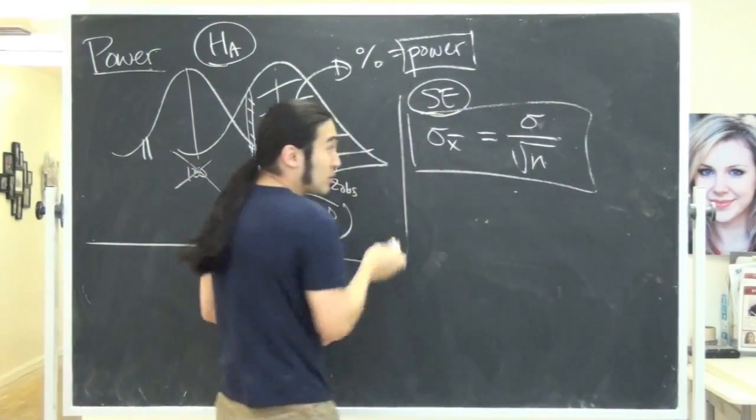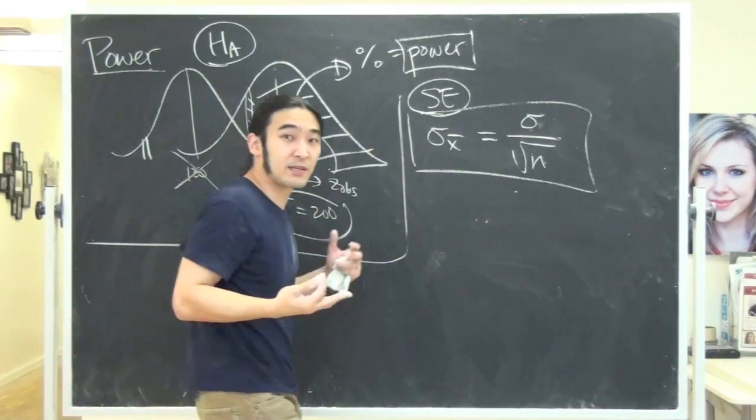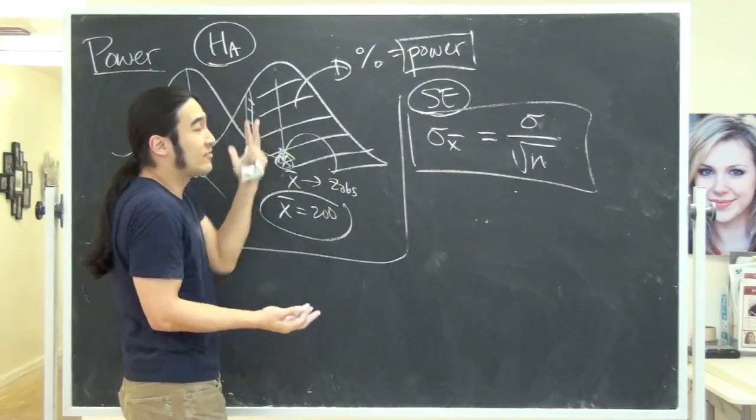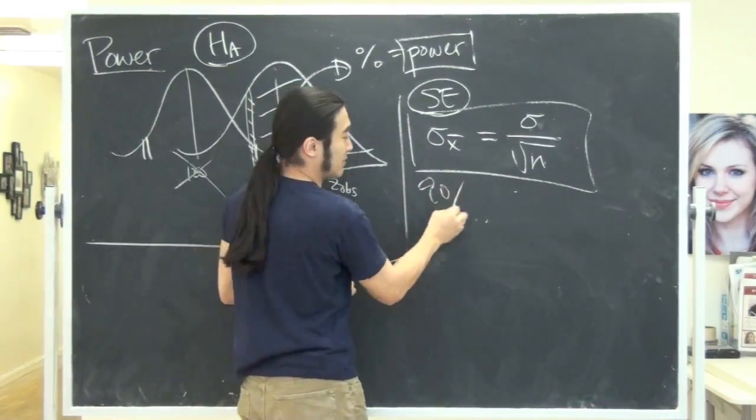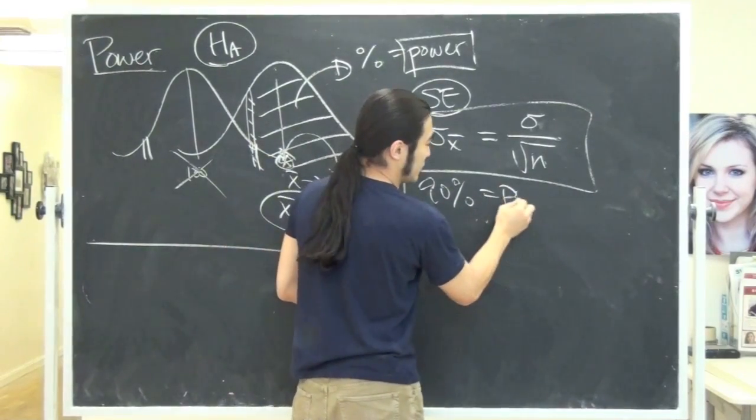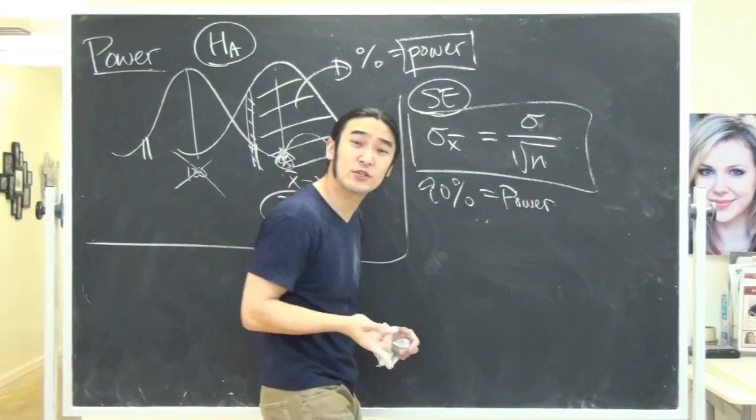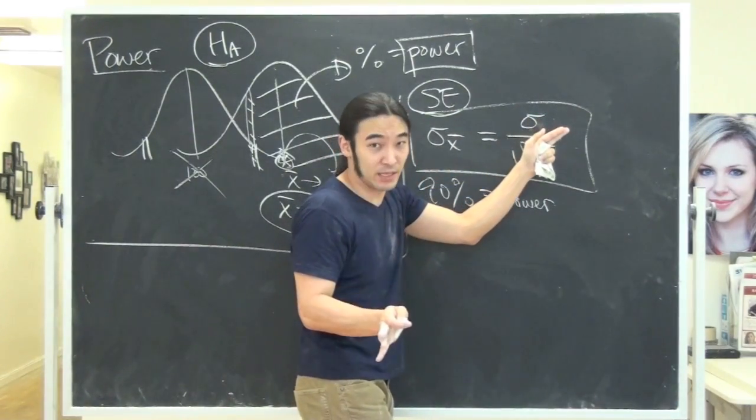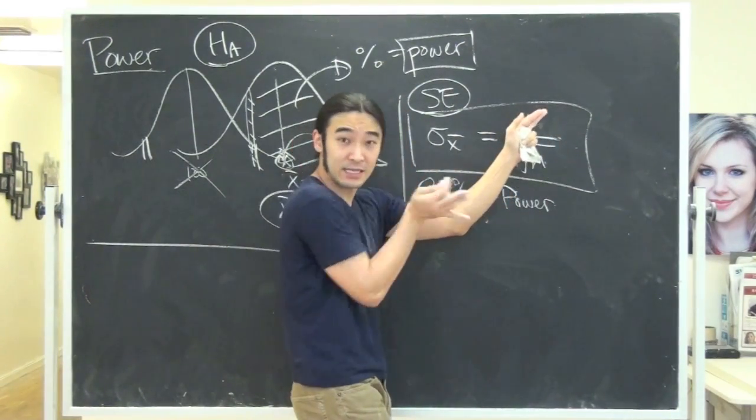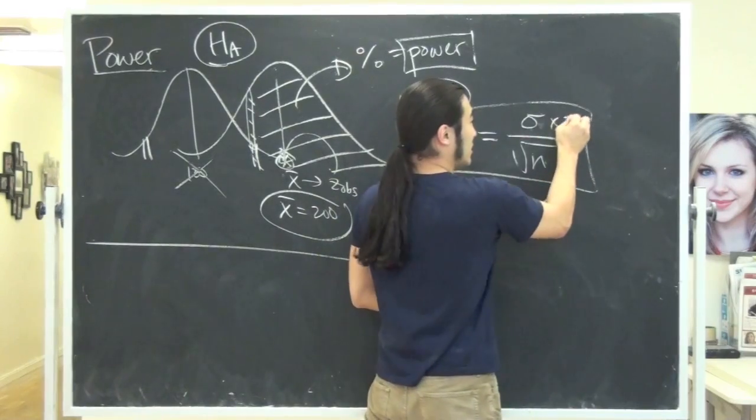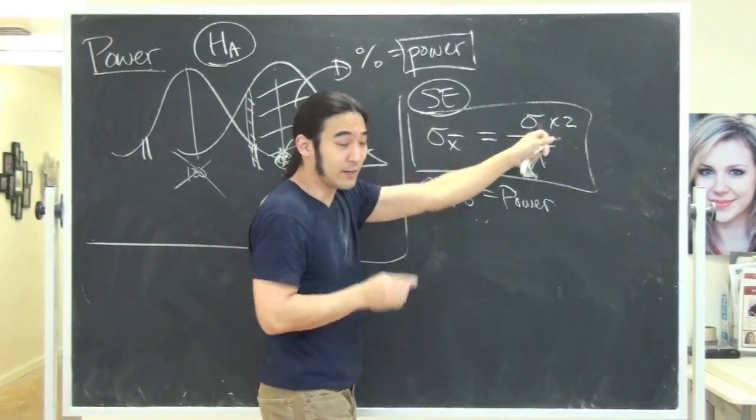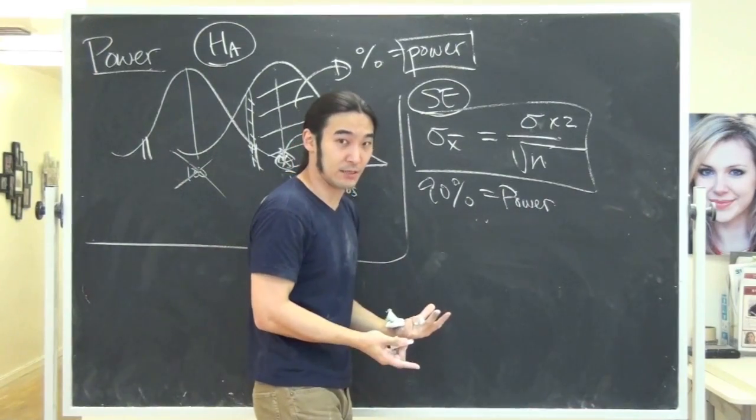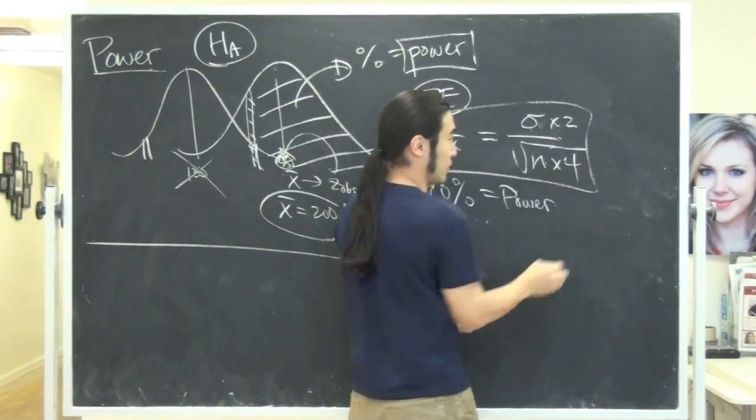So probably one of his favorite things to do is something like this. What if you had a test? You did whatever. You found out the power, let's just make up a number. You found out the power was extremely high. Say the power was 90%. Then his question would be, what would happen if you doubled the standard deviation of the population? Not the standard error, but the standard deviation of the population. So that would be like times two here. But at the same time, you quadrupled the sample size. So you would take n and you would quadruple that.